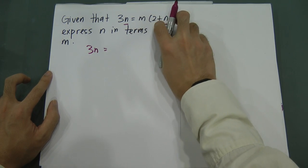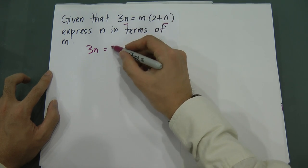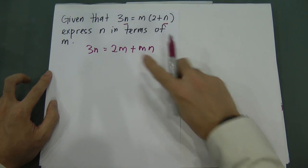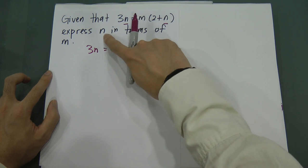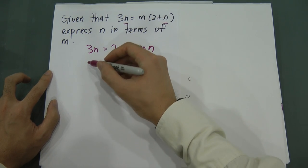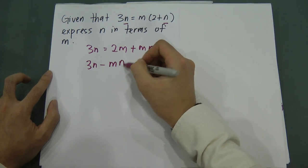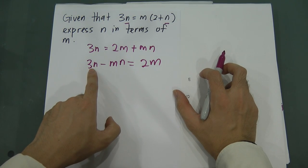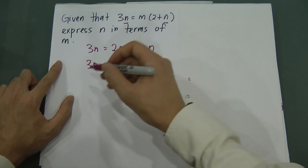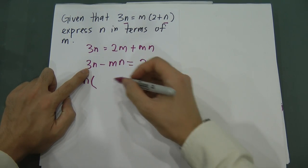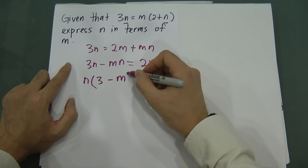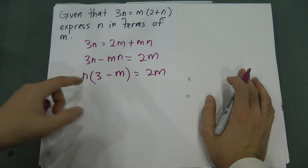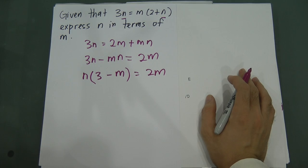I expand first: 3n equals m multiplied into both terms — m times 2 gives 2m, and m times n gives mn. Because I want n as the subject, I move everything with n to one side. So this becomes 3n minus mn equals 2m. Then I factorize out n — I take n out from both terms — leaving n times (3 minus m) equals 2m.